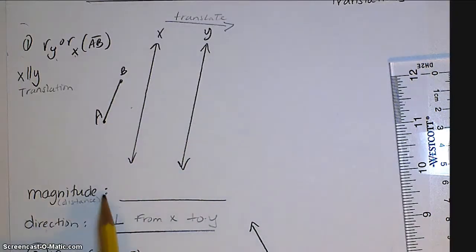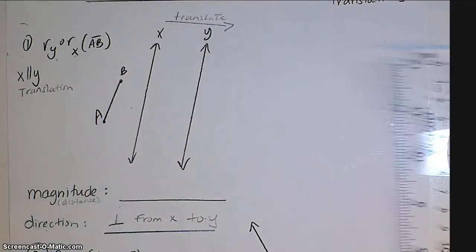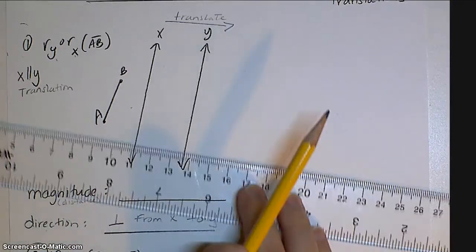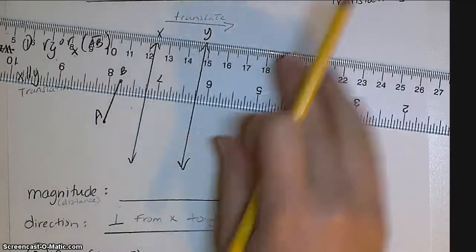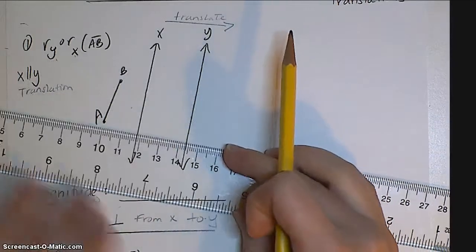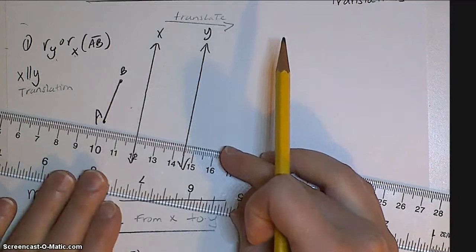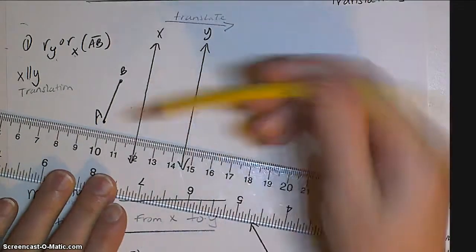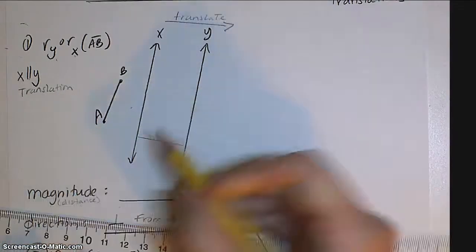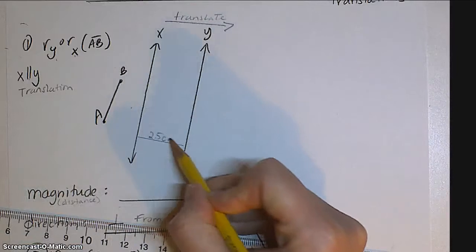And then we need to figure out by how much are we actually translating. Well, we know from our previous lesson that we have to measure the distance between our lines of reflection. So I'm going to go ahead and measure... This is about 2.5 centimeters.